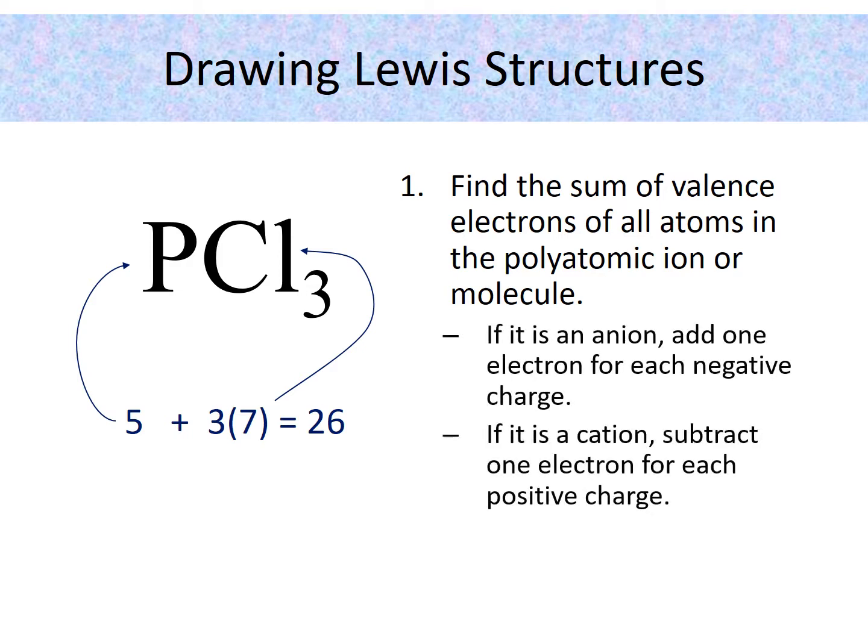Now this molecule has no charge. If it had a charge, for example, if it was an anion, that means we would need to add one more electron for each negative charge. For example, if it was a two minus, then we would add two electrons. Three minus, three electrons.